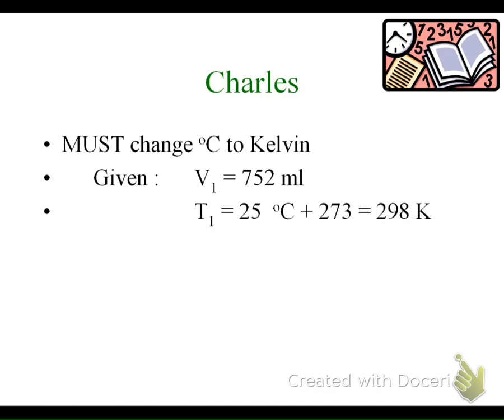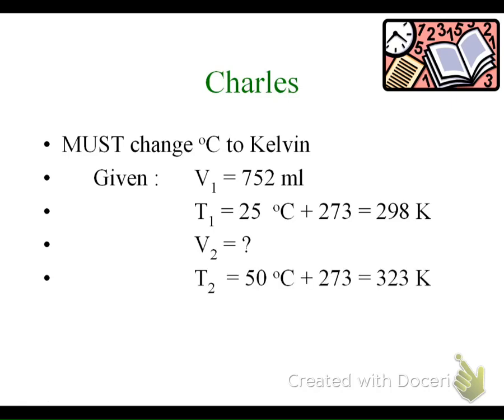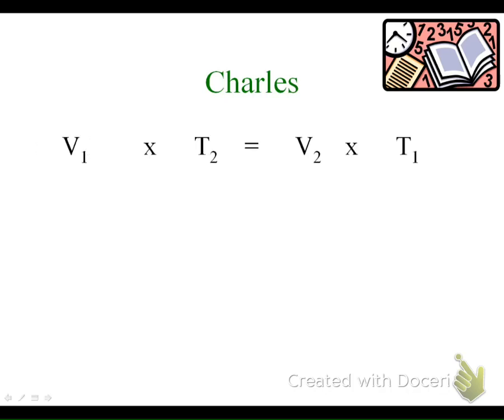So listing our givens: our initial volume V1 is 752 milliliters, and our initial temperature is 25 degrees Celsius. To show my work converting degrees Celsius to Kelvin, I add 273, so my initial temperature T1 is 298 Kelvin. My V2 is what I'm trying to find. My T2 is 50 degrees Celsius plus 273, which gives 323 Kelvin. Now I can plug into my algebraic formula — I prefer the linear form, but you can use the fraction formula; mathematically it comes out the same.